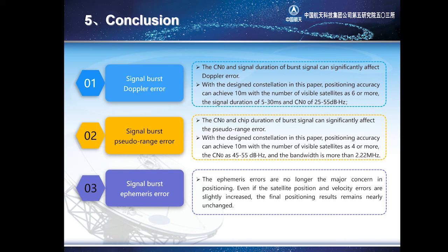Second, the carrier-to-noise ratio and chip duration of LEO navigation signals can significantly affect the pseudo-range error. With the increase of pseudo-range error, the positioning error essentially presents a trend of linear increase. With the designed constellation in this paper, positioning accuracy can achieve 10 meters with the number of visible satellites as 4 or more, a carrier-to-noise ratio of 45 to 55 dBHz, and a bandwidth of more than 2 MHz.